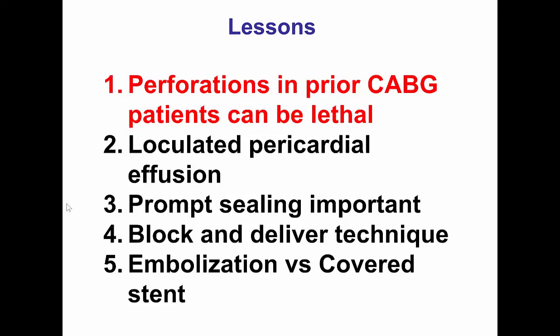Small vessel perforations can be treated with a block and delivery technique through a single 8 French guide catheter: a balloon is inflated proximally to stop bleeding into the pericardium, and then a microcatheter is advanced into the perforated vessel through which coils are deployed. However, if the branch is so small that advancing a microcatheter is not feasible, another option is placing a covered stent across the ostium of the perforated vessel. Embolization also requires knowledge of different coils available. In this case, we used 0.018 Azure coils requiring the larger Progreat microcatheter; however, another option is 0.014 coils such as the Axium, which can be delivered through any standard CTO microcatheter like the Finecross, Corsair, or Turnpike. Thank you.